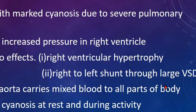Second, there will be a right-to-left shunt through the large VSD. The blood expected to go into the pulmonary artery won't go properly because of severe stenosis, so it shunts right to left. Unlike ASD, VSD, and PDA where there is left-to-right shunting with no cyanosis, here the shunting is from right to left. There is also an overriding aorta whose opening is on both the right and left sides, so mixed blood goes to all parts of the body, causing cyanosis.